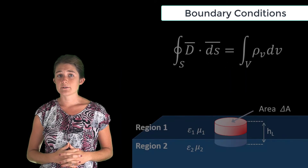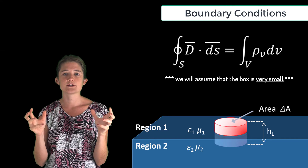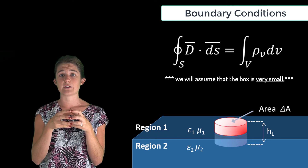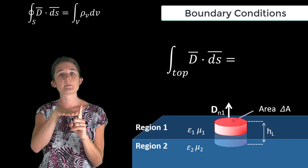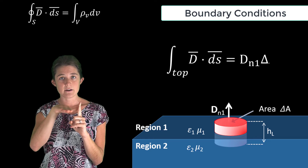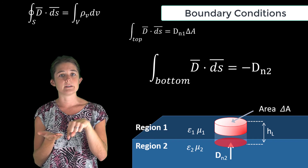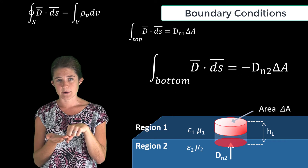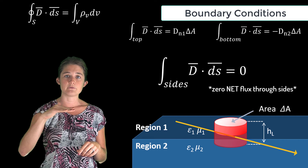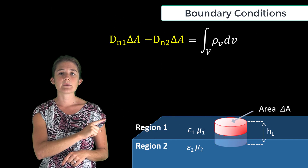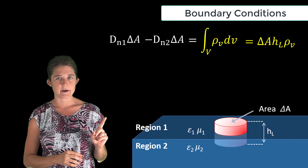Next, let's consider Gauss's law over a small box located half in region one and half in region two. Assuming the box is small enough that the fields don't vary over its faces, the integral of D dot dS on the top of the box is the normal part of the D field in region one times the area of the top, and the integral on the bottom is negative the normal D field in region two times that area. The integrals on the sides are zero because anything coming in one side flows right out the other.